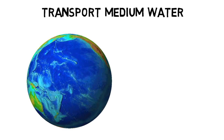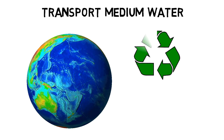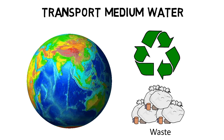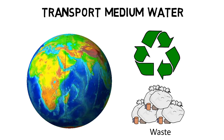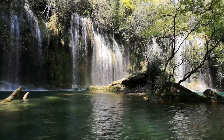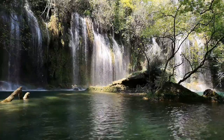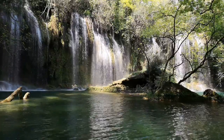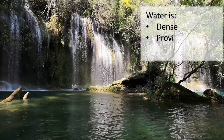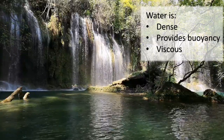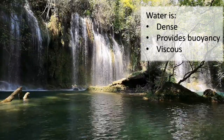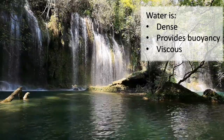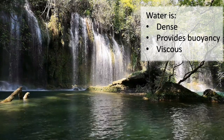Every living organism creates directly or indirectly waste substances, which have to be treated or converted back into useful resources. To transport waste substances to treatment facilities, there is no other liquid that can transport wastes better than water. Water is dense and provides enough buoyancy as well as viscosity to transport items and erode surfaces, therefore wastewater treatment deals with the removal of waste substances from water.